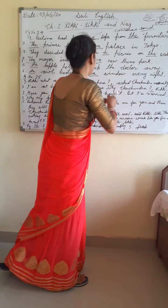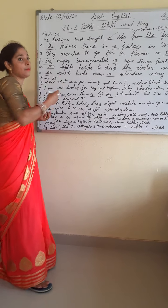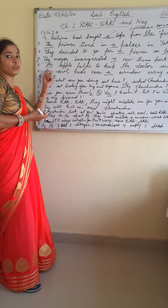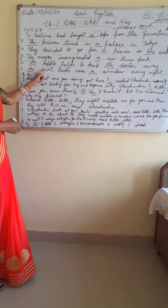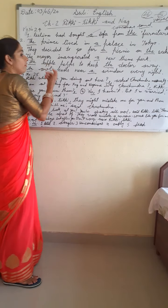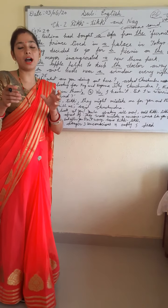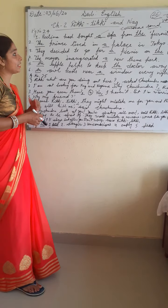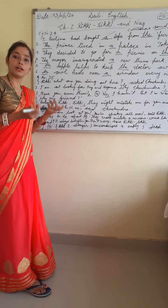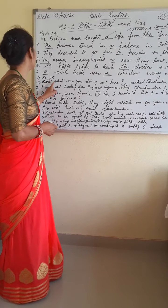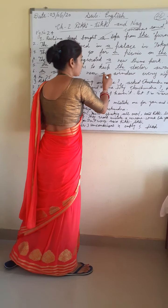Sentence 5: An apple helps to keep the doctor away. Here 'apple' starts with a vowel sound, so before it you fill 'an.' Before 'doctor' you fill 'the.' Sentence 6: An owl hoots near a window every night. 'Owl' starts with a vowel sound. Note about words starting with H — like 'honest': the spelling is H-O-N-E-S-T but the sound is a vowel sound, so we always say 'an honest person.' For 'window,' it is a consonant sound, so use 'a.'